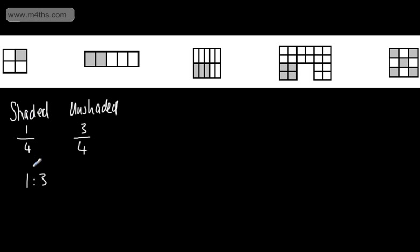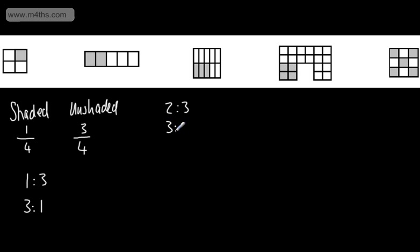So this is the ratio of shaded to unshaded. This is going to be the ratio of unshaded to shaded parts. Let's look at this one right here. I've got two shaded and three unshaded, so we could say as a ratio it would be two to three — that is shaded to unshaded. If we wanted it the other way round, unshaded to shaded, it would be three to two.